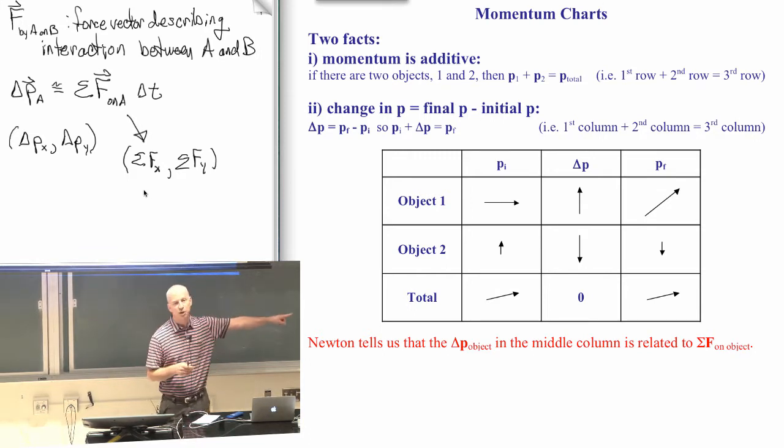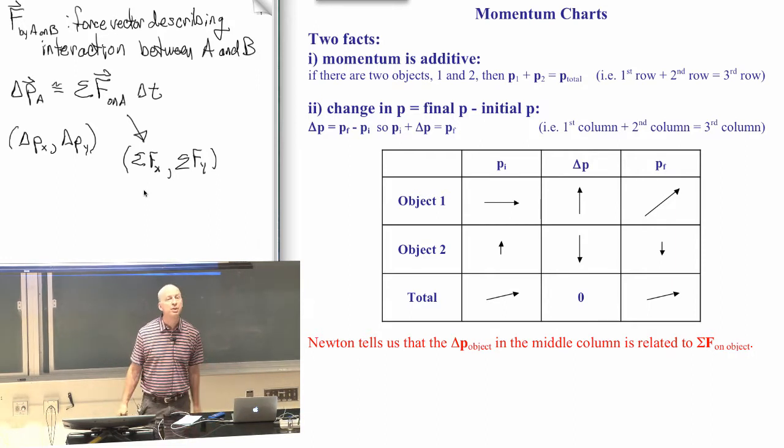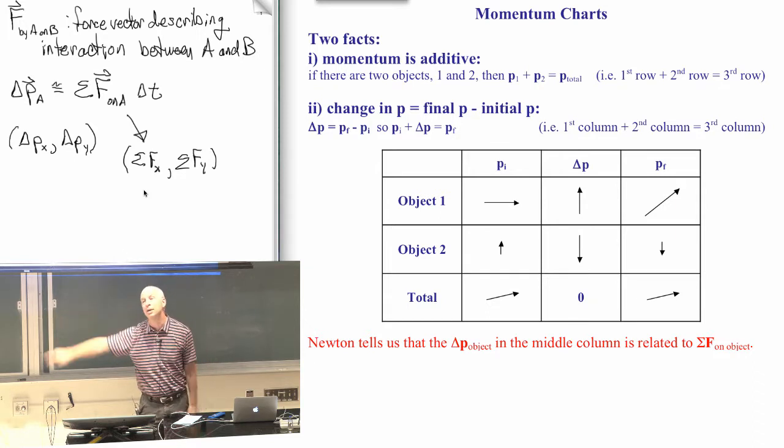So if fx is two newtons this way, and there's another force which is three newtons that way, then the sum of those two would be one newton that way.